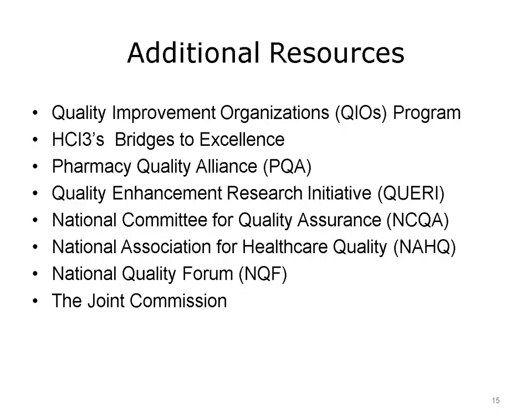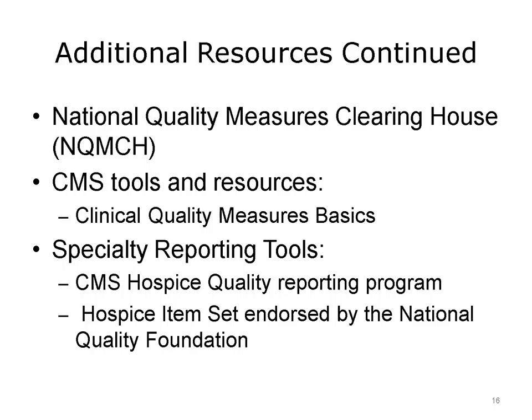The Joint Commission's accreditation includes its key quality measures program of top performers, which recognizes accredited hospitals that attain excellence on accountability measure performance. The program is based on data reported about evidence-based clinical processes for conditions including heart attack, heart failure, pneumonia, surgical care, children's asthma, inpatient psychiatric services, venous thromboembolism, stroke, perinatal care, immunization, tobacco treatment, and substance abuse. The Joint Commission monitors hospitals to ensure they achieve the required reporting standards. The National Quality Measures Clearinghouse, NQMC, is a public resource for evidence-based quality measures supported by AHRQ. CMS provides many tools on its website to assist providers with quality activities, including resources on the basics of clinical quality measures and quality reporting resources for various medical specialties.